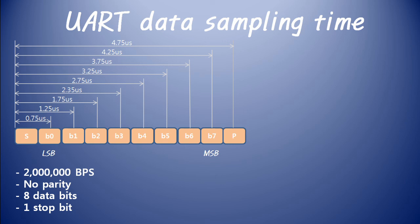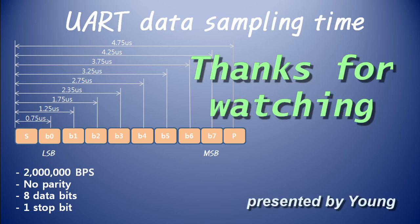An RS-232 level USB serial converter includes a TTL to RS-232 level converter. Most RS-232 level converter chipsets do not support 500,000 BPS or 1,000,000 BPS. I hope this helps your project.